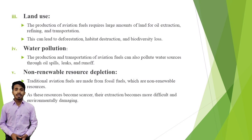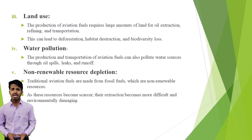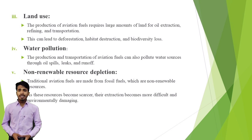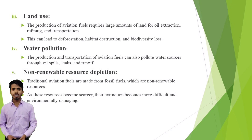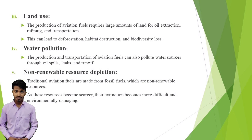This is a diagram of CO2 emissions by aviation. Regarding land use, the production of aviation fuels requires large amounts of land for oil extraction, refining, and transportation, which can lead to deforestation, habitat destruction, and biodiversity loss. The production and transportation of aviation fuels can also pollute water sources through oil spills, leaks, and runoff. Traditional aviation fuels are made from fossil fuels, which are non-renewable sources. As these resources become scarcer, their extraction becomes more difficult and environmentally damaging.